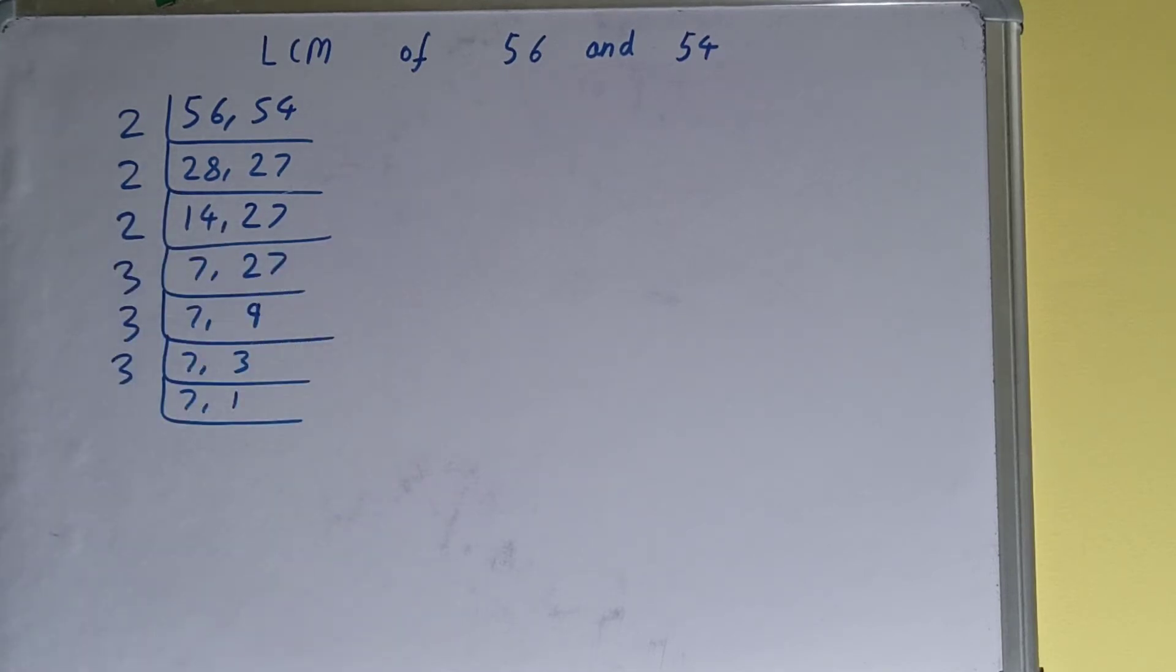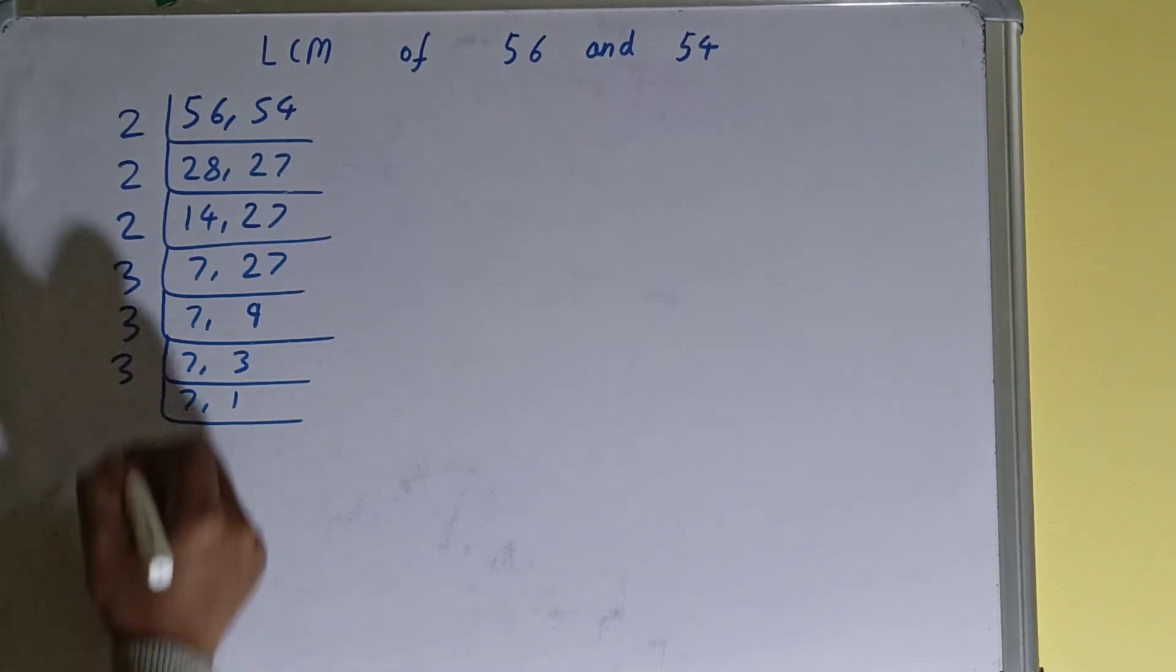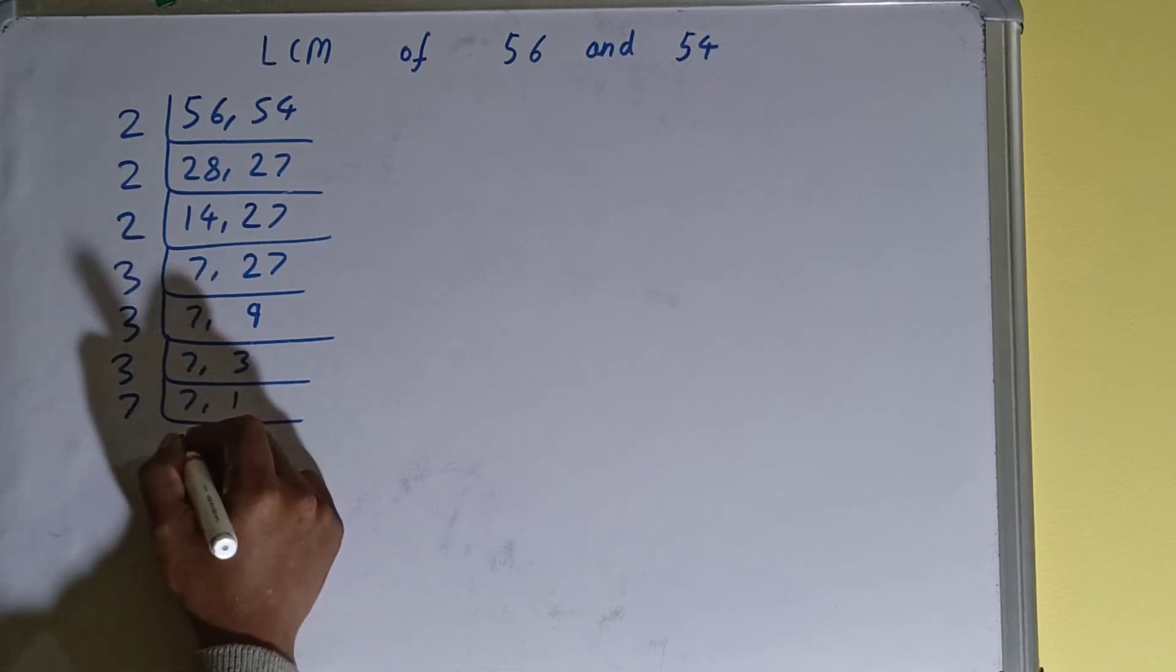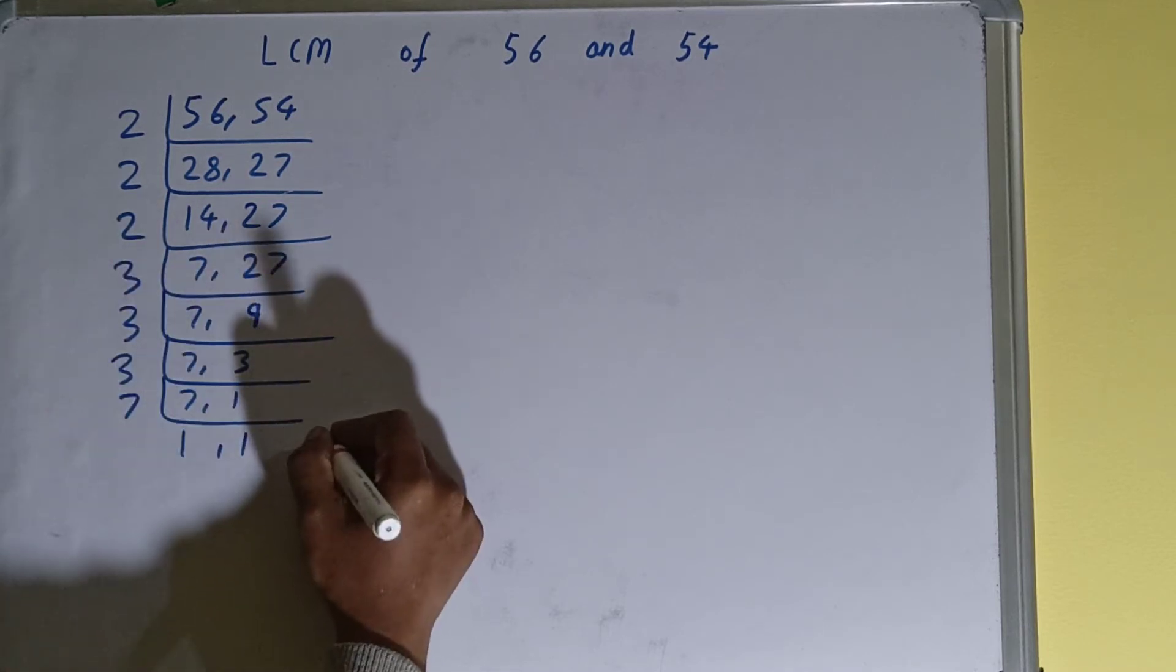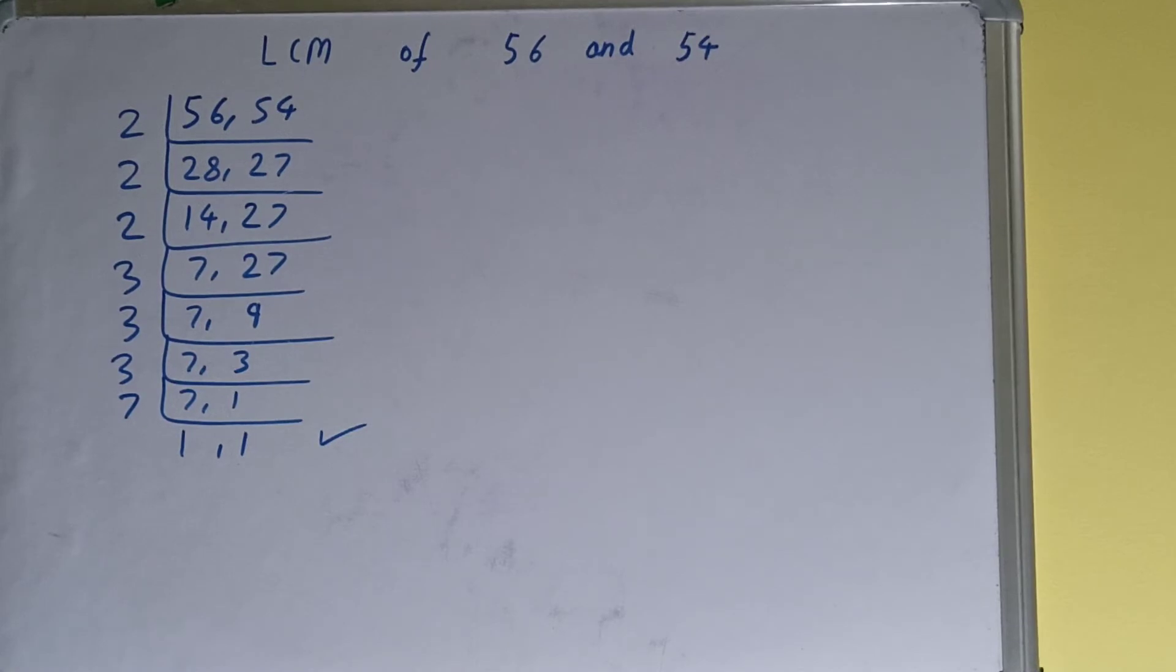Now none of the numbers are divisible by 3. If you see, the number 7 is a prime number, that means it can be divided by itself only. When we do so, we'll get 1, 1. Once we get that, we need to stop and do one last thing.